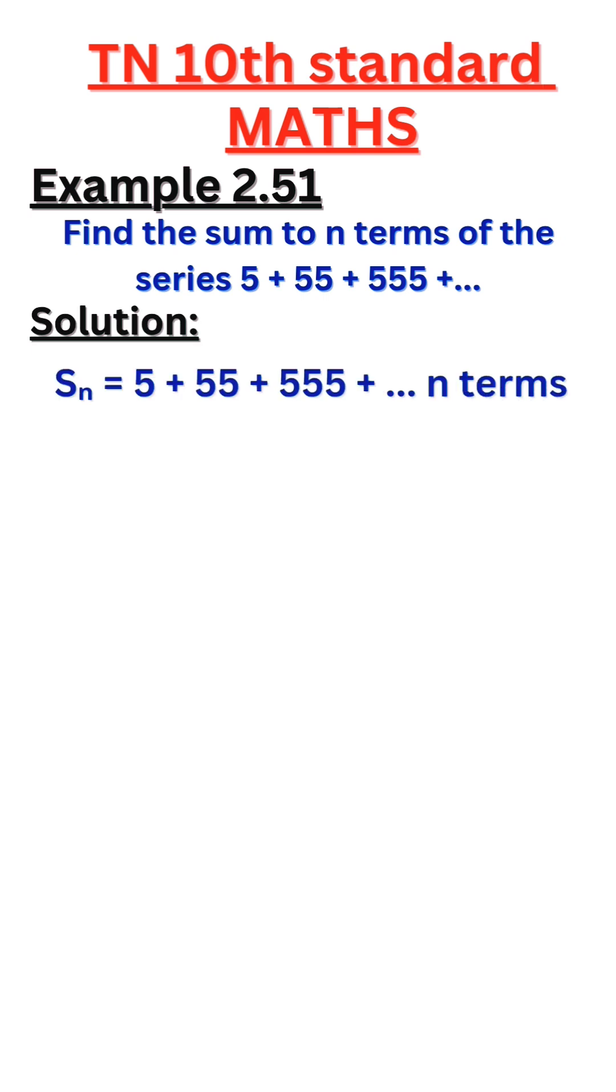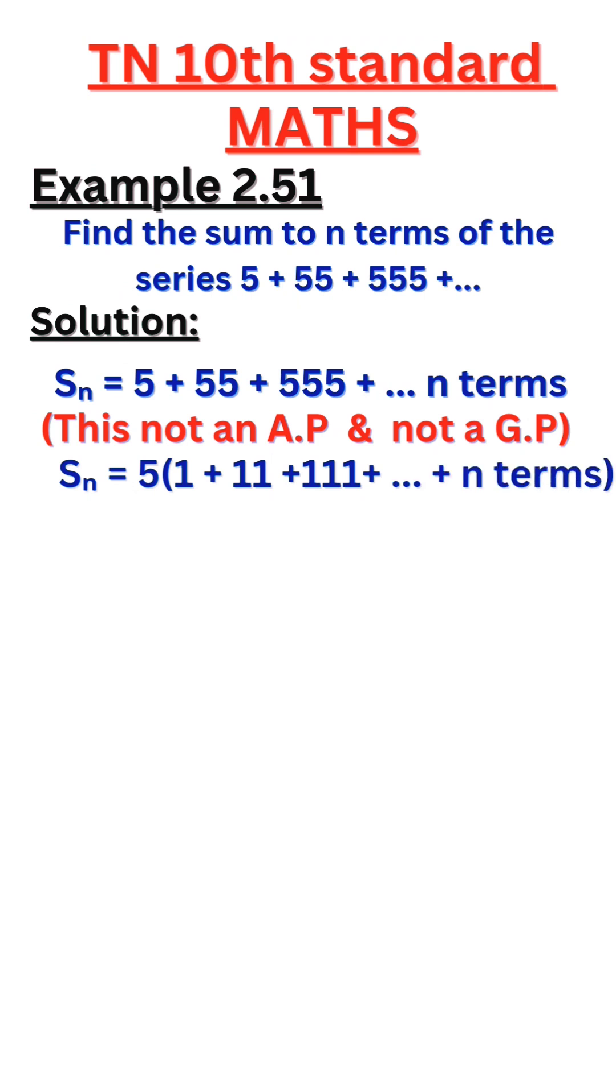This is not an AP and not a GP. Take out 5 commonly, we get 5 into 1 plus 11 plus 111 plus dot dot dot plus n terms. We didn't get AP and GP.